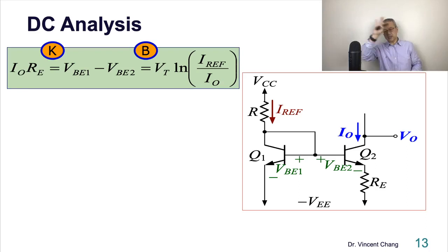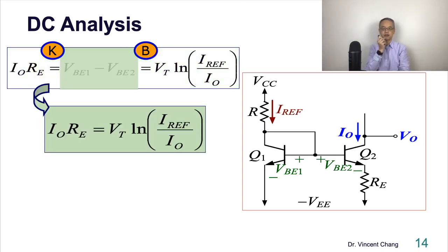So on the left, you use the KVL. On the right, you call on bipolar characteristic and connect both sides together and take out the difference between VBE1 and VBE2. Then you get this result. This is the result I want to show you. This is the result of the DC analysis.